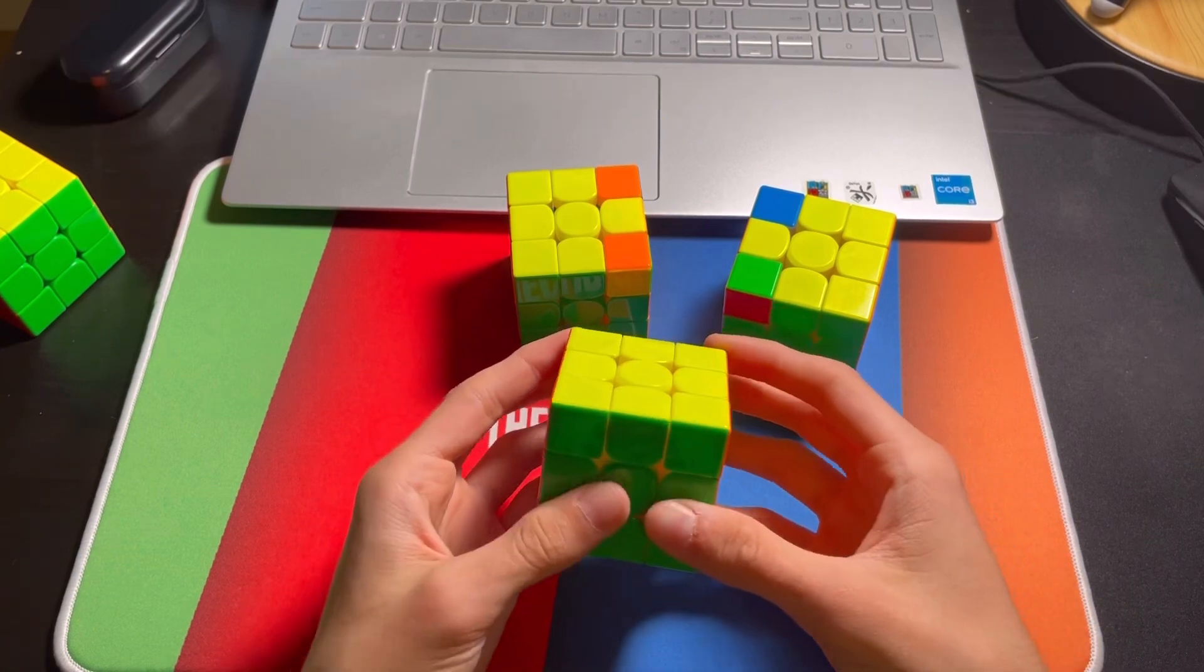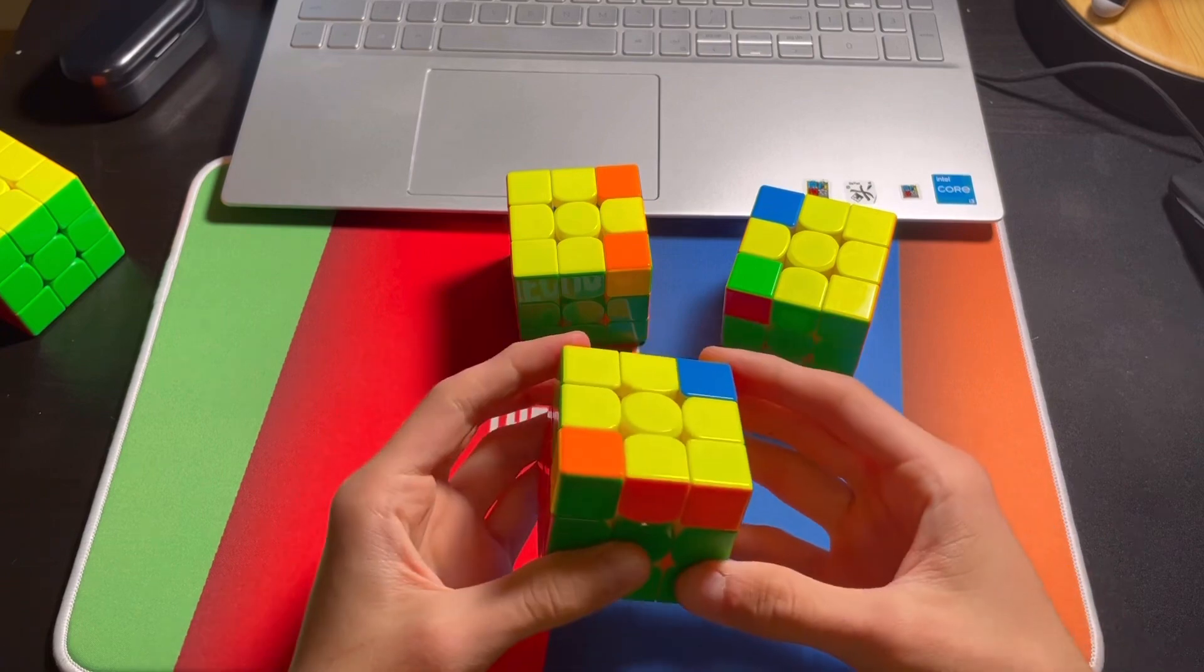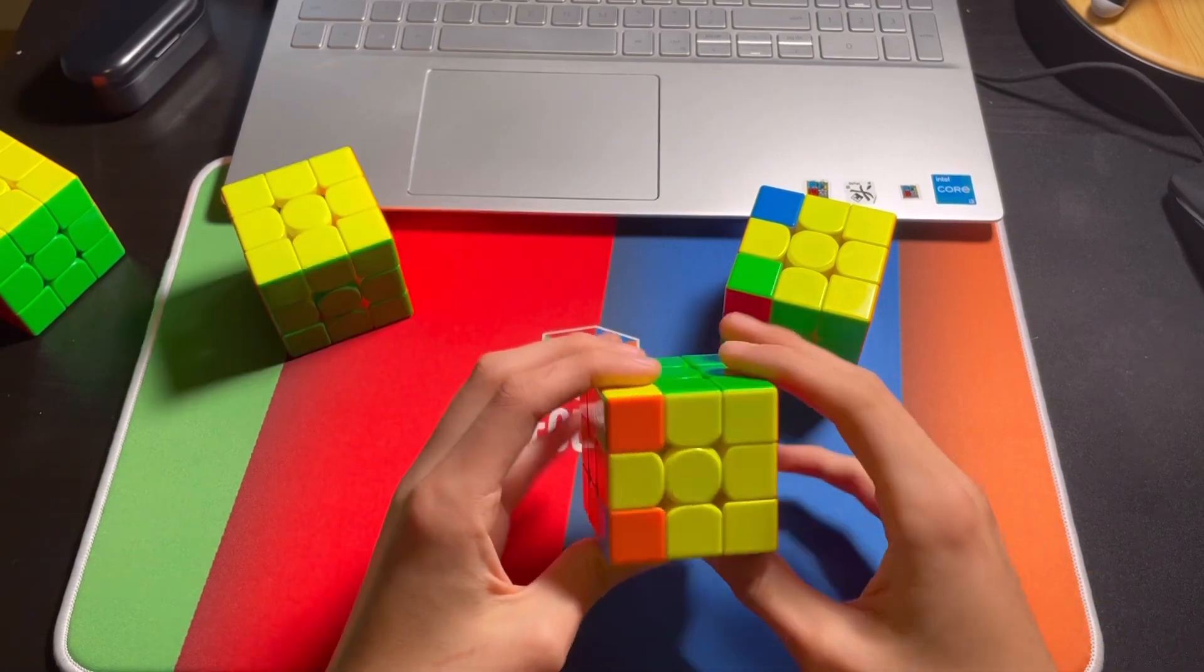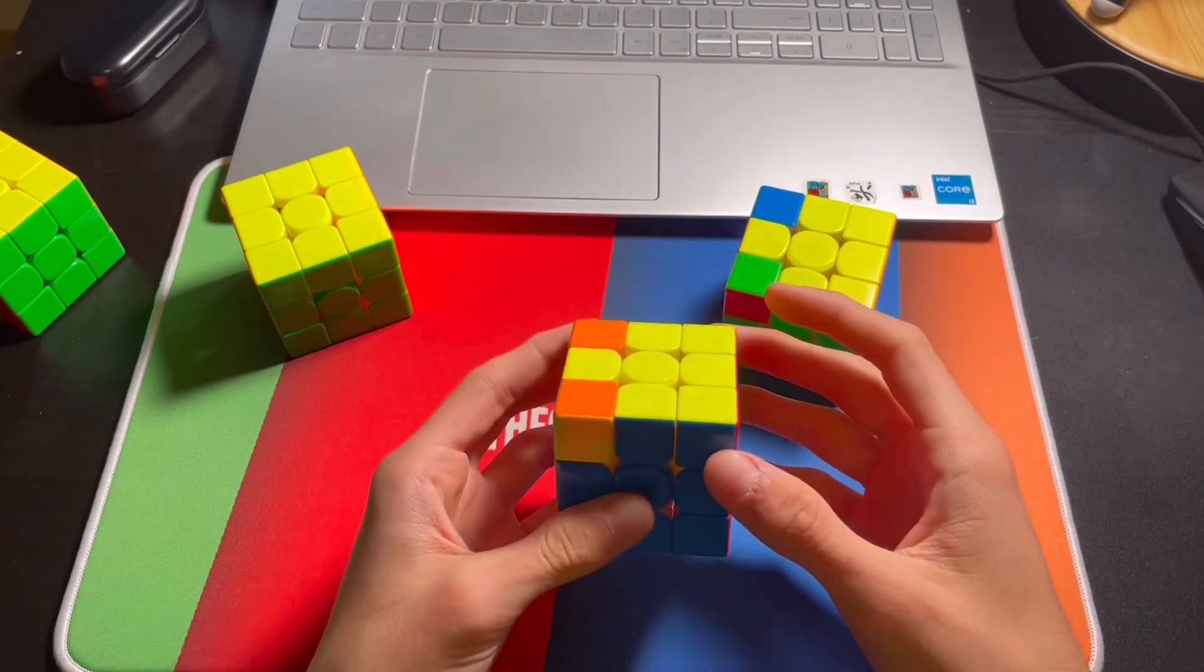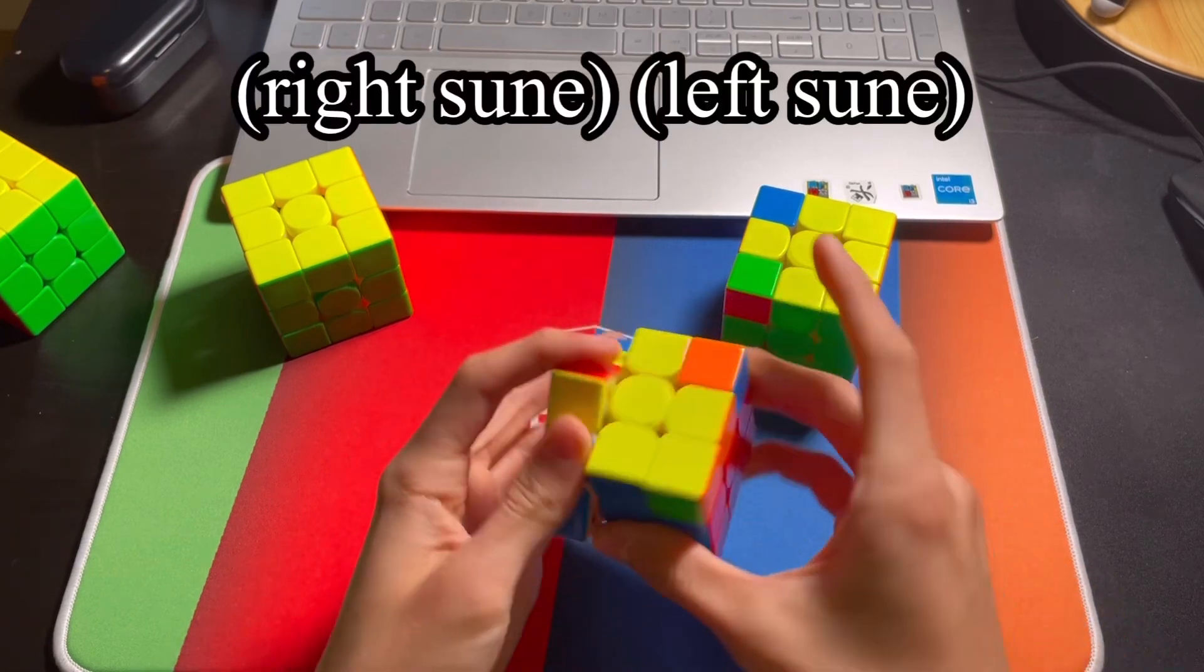A little bit faster, that looks like this. The next one is even easier, it's the same thing where everything is already solved, except these two corners need to be flipped, and we solve this with right-sune, left-sune.